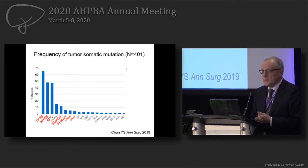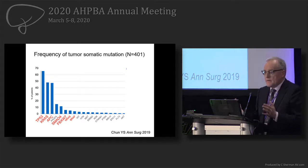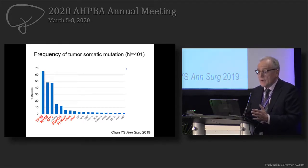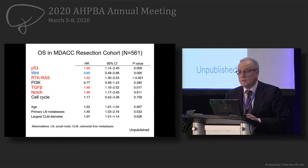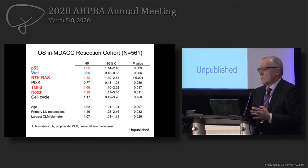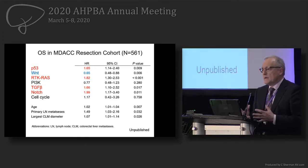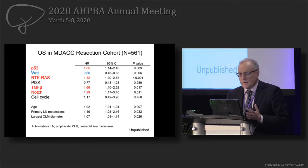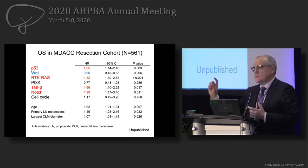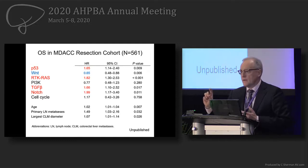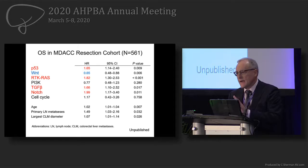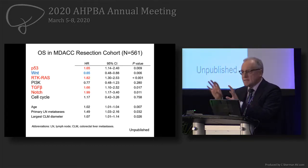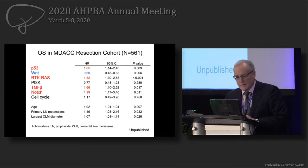Those are the mutations that are important — mainly the driver mutations with the elephant in the room: TP53. In multivariate analysis, these five pathways represented by these mutations affect prognosis. Interestingly, APC mutation is associated with improved survival, probably because it's linked to the adenoma-carcinoma sequence type of colorectal cancer rather than flat polyps or villous adenomas.